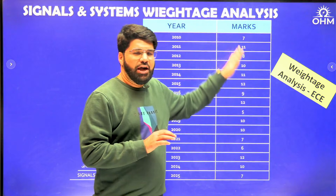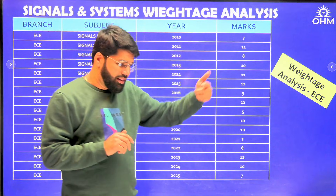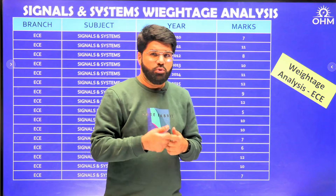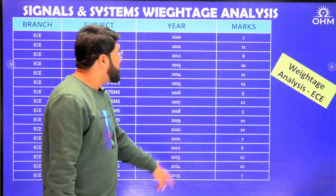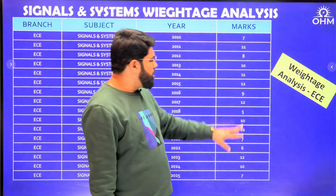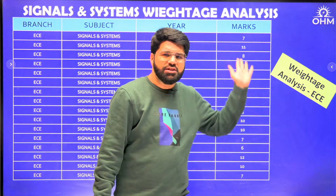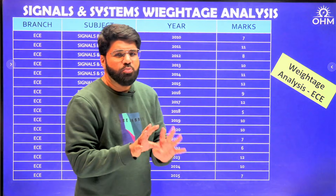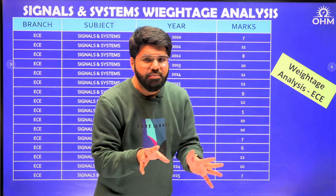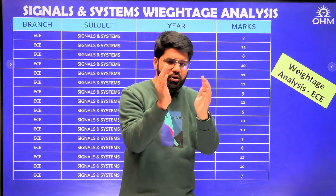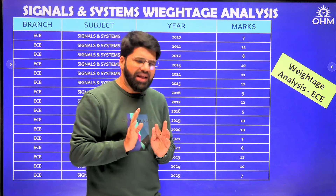The weightage analysis for EC covers how many marks have been asked starting from 2010, the year the pattern of 65 questions was introduced, continuing through 2025. Many times you get 10 marks, 12 marks, sometimes 6 or 7 marks. The average accounts to around 9 marks. As an EC aspirant going into the exam hall, be prepared — Signals will carry 8 to 10 marks in your paper, and that's a good weightage.